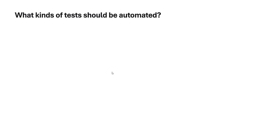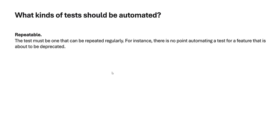What kind of tests should be automated? There are certain criteria. One is repeatable — a test must be one that can be repeated regularly. There is no point automating a feature that is about to be deprecated. For example, regression testing. If you're working on a banking project, login is repeatable, and so are transfers and payments — all these are repeatable scenarios that you need to automate.